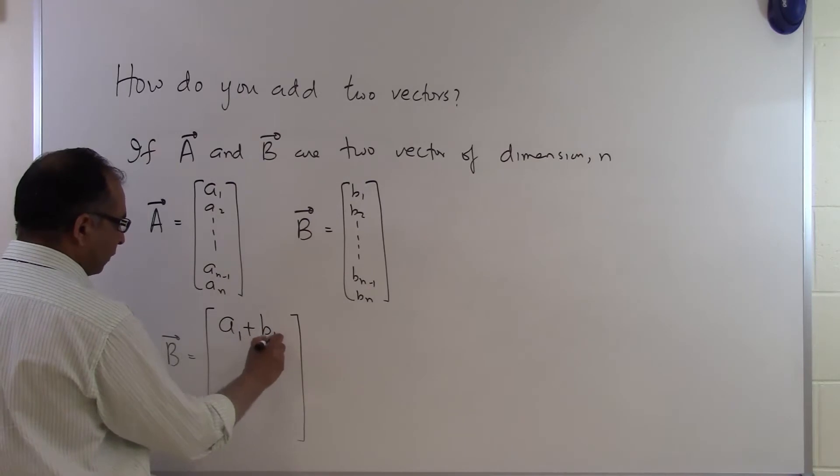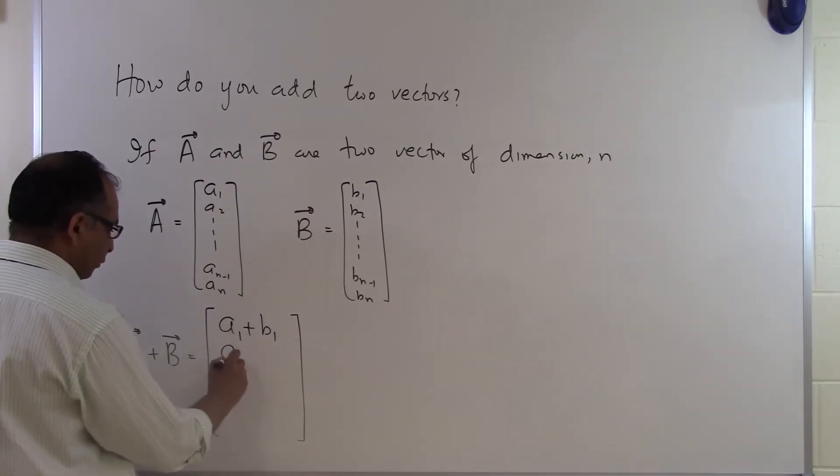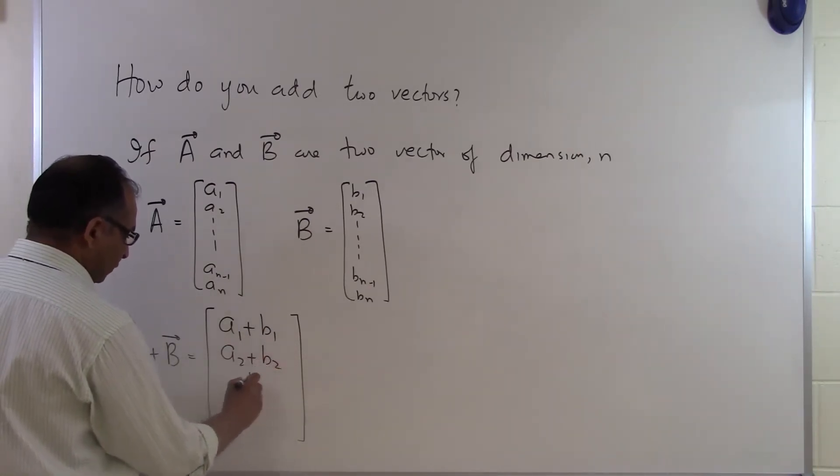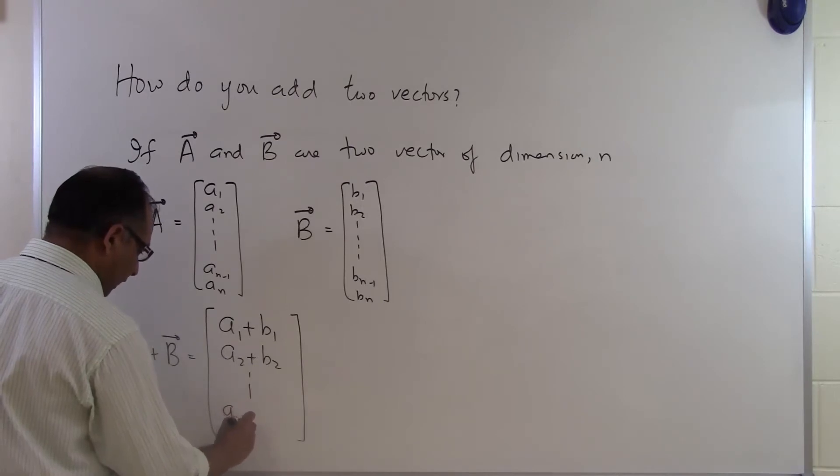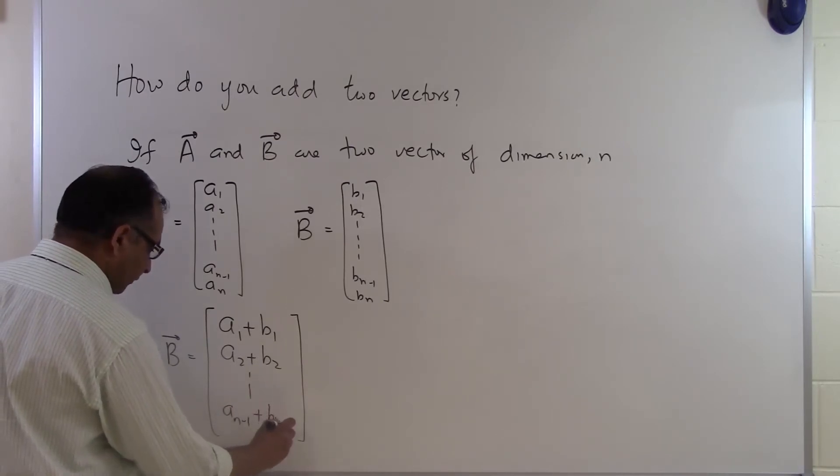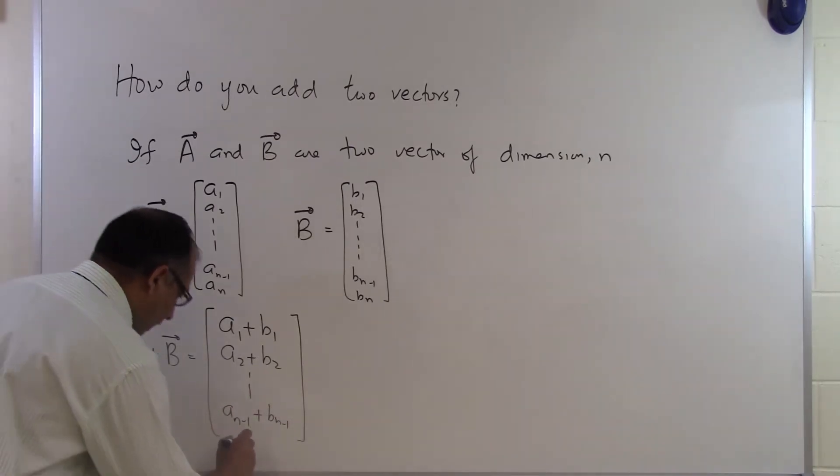So the first component will be A1 plus B1, the second component will be A2 plus B2, the second last component will be A sub n minus 1 plus B sub n minus 1, and the last component will be An plus Bn.